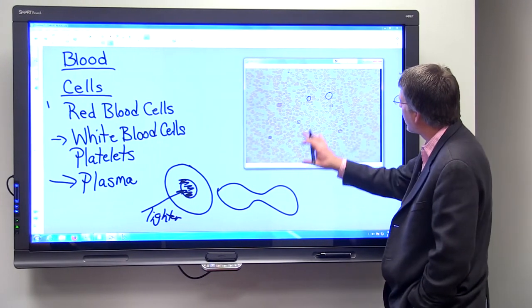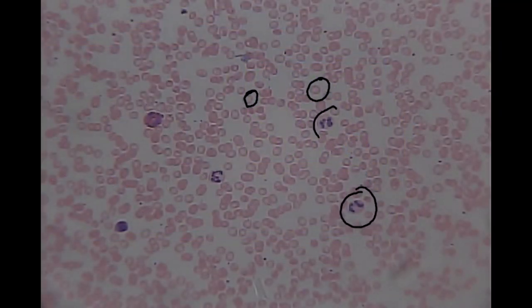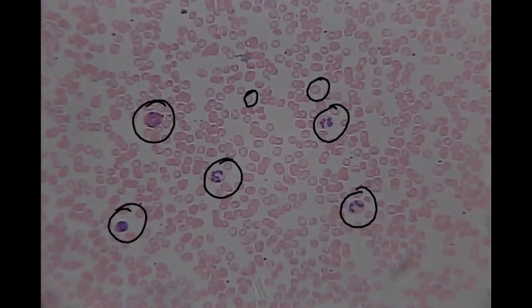You can see three different kinds of white blood cells here. Later you'll learn about these, but these are white blood cells called neutrophils. This is a white blood cell called an eosinophil, and this is a white blood cell called a lymphocyte.